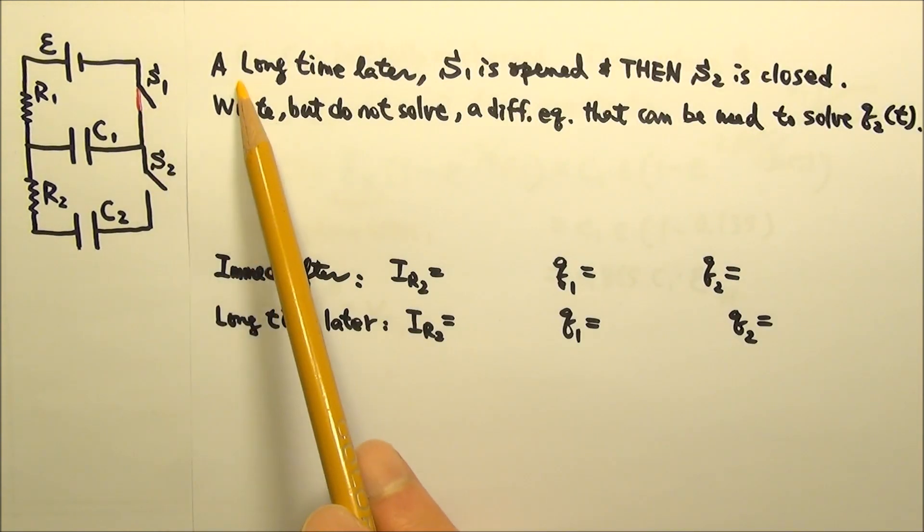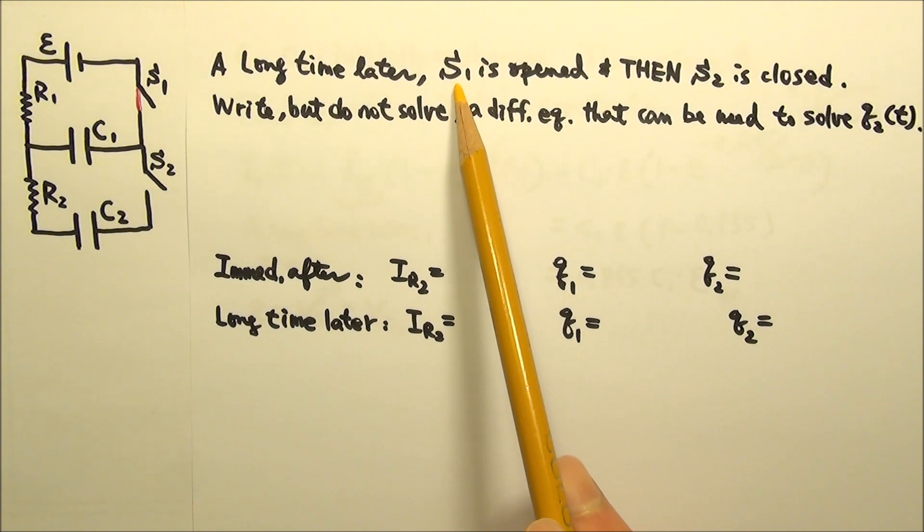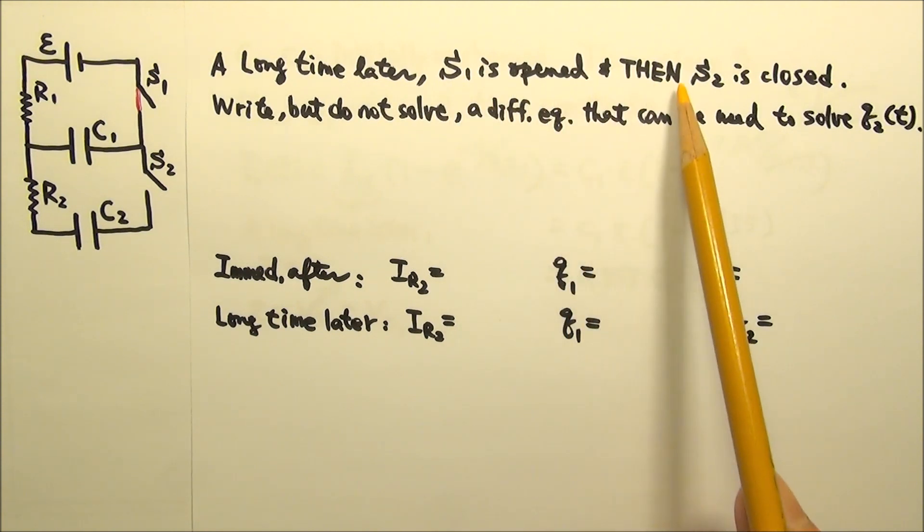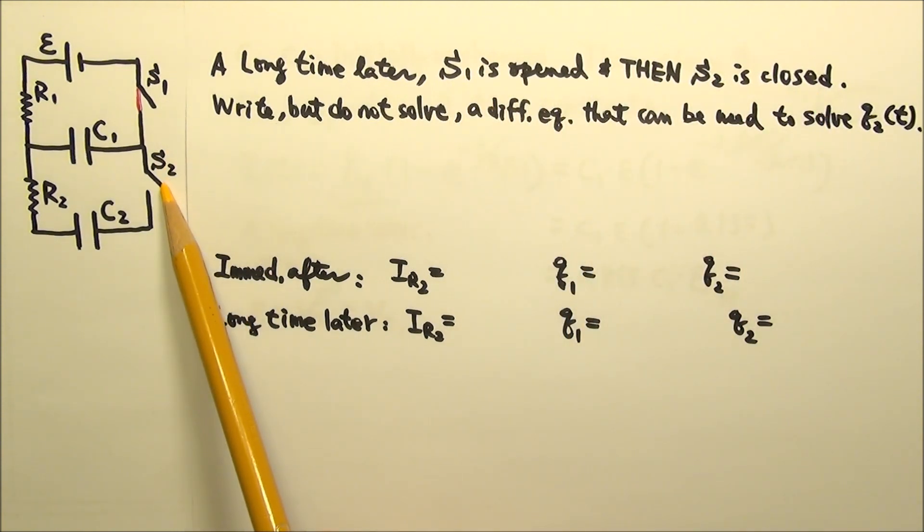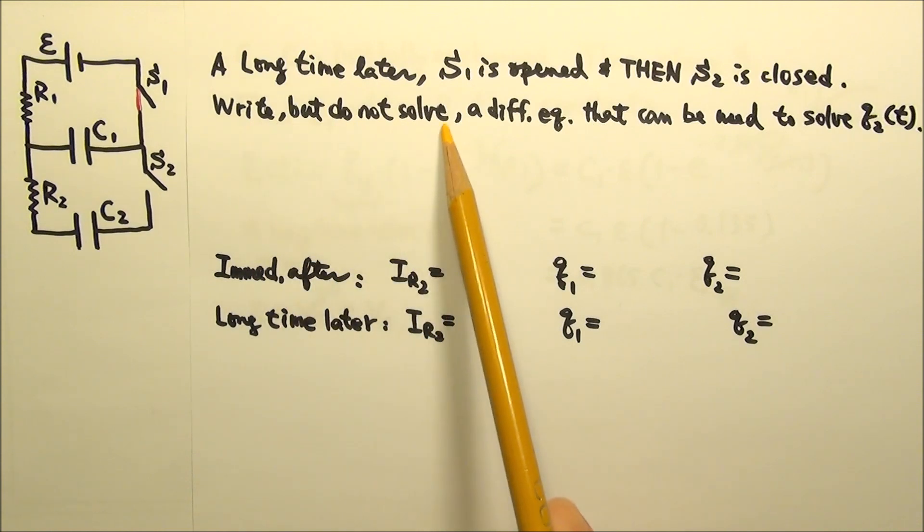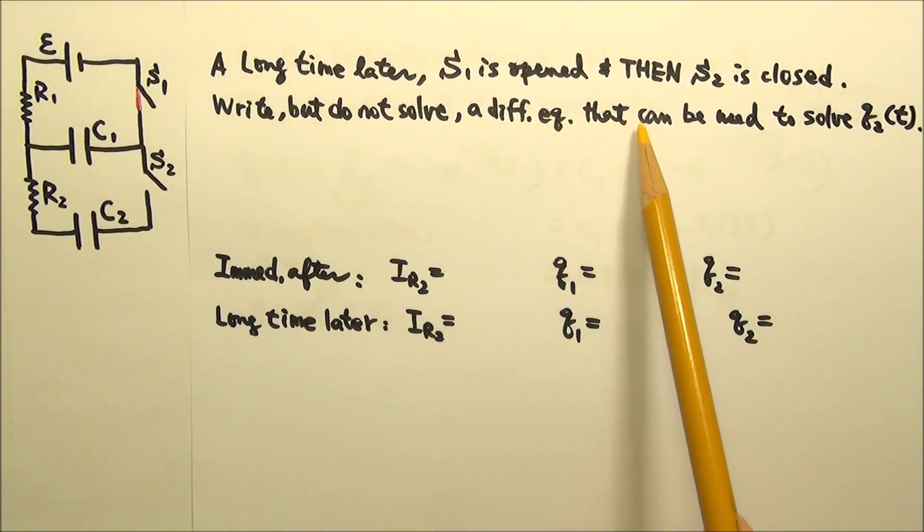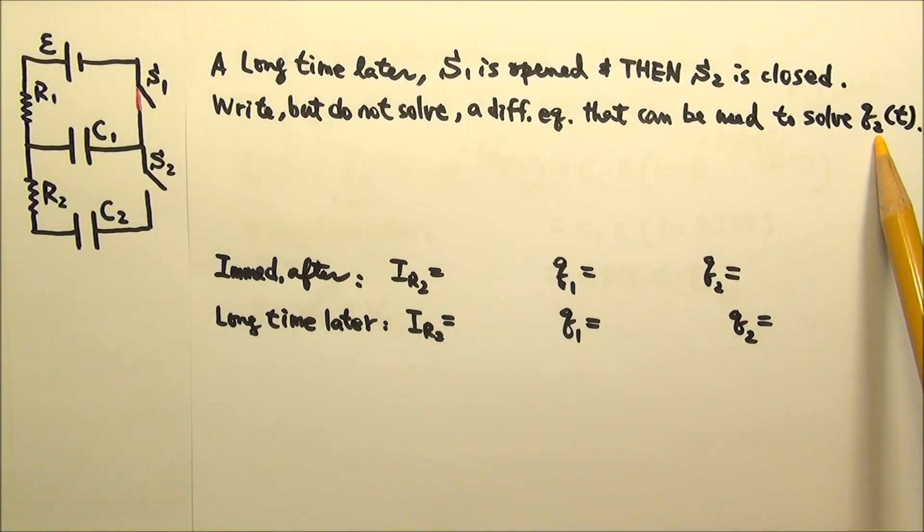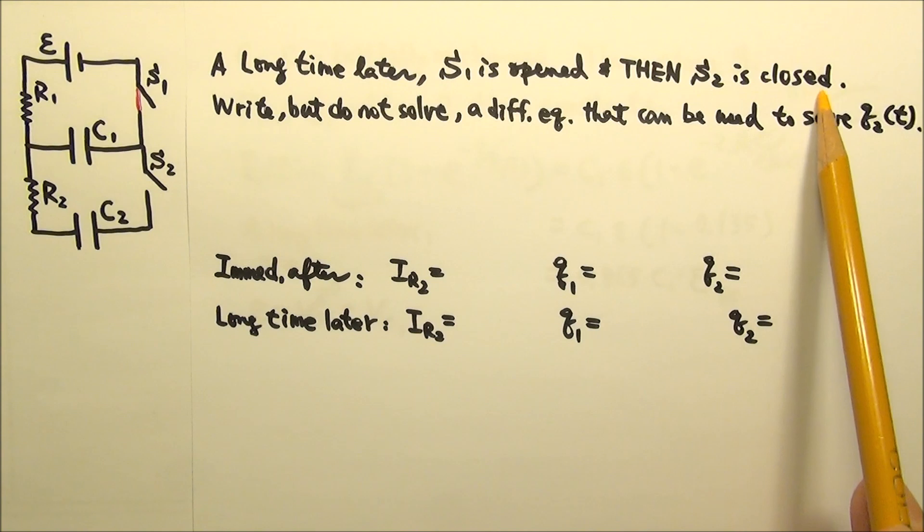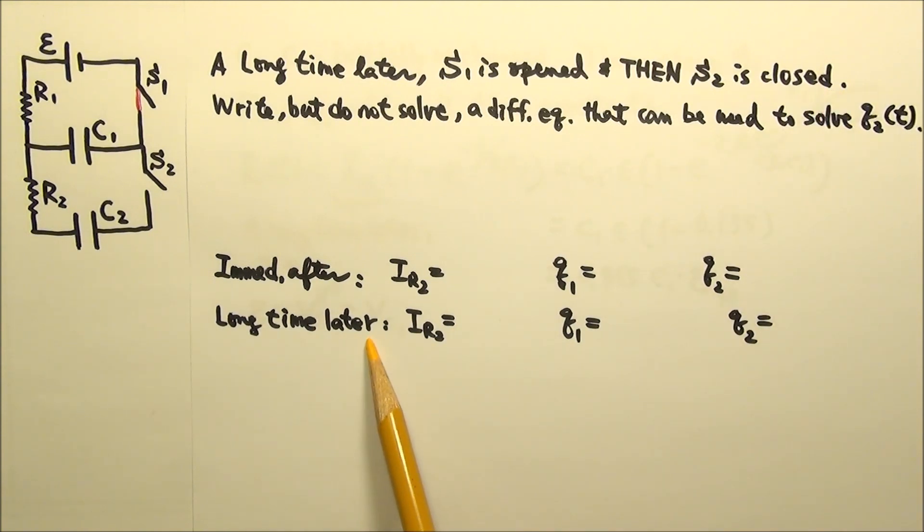After S1 has been closed for a long time, S1 is now opened, and then S2 is closed. Write but do not solve a differential equation that can be used to solve for the charge on C2 as a function of time. Please also find the current in R2 and the charge on each capacitor immediately after S2 is closed and a long time later.